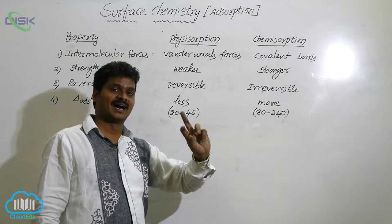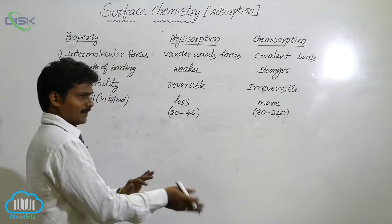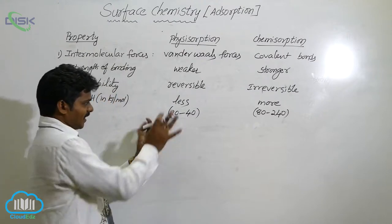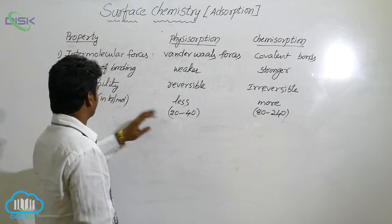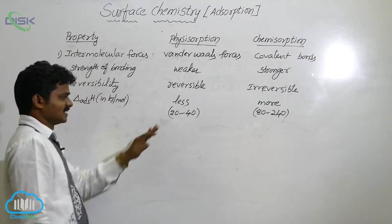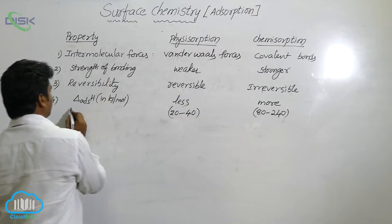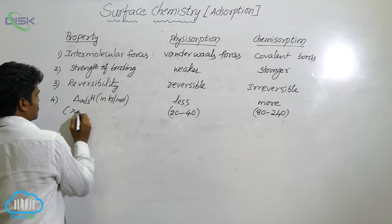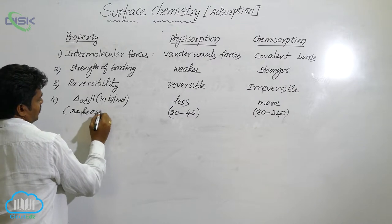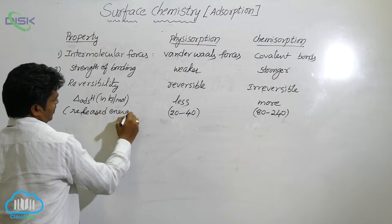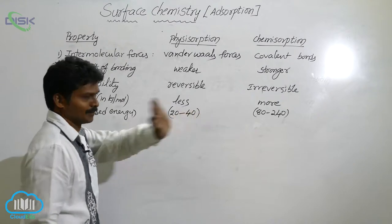Released energy is always expressed with a negative sign. So the enthalpy of adsorption for physisorption is −20 to −40 kJ/mol, and for chemisorption it is more negative, −80 to −240 kJ/mol. Physisorption has less enthalpy of adsorption, while chemisorption has more.